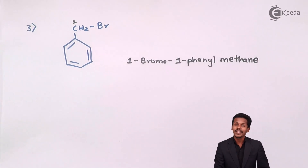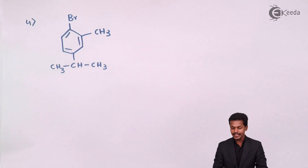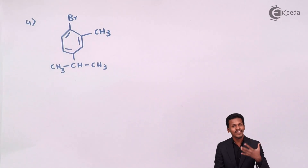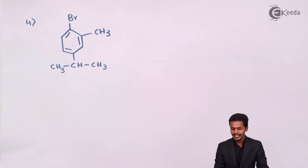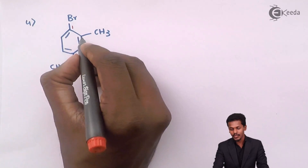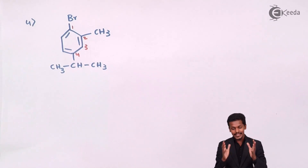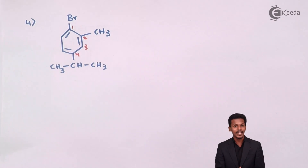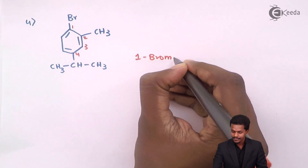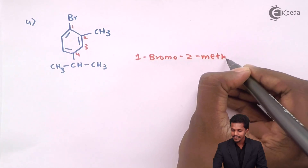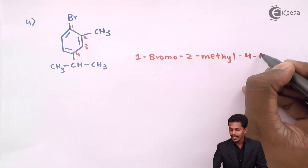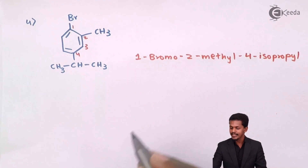Now let us move to the next structure. This is again an example of a haloarine, so the least number should be given to the carbon atom where the bromine or halogen atom is attached. I give carbon number 1 there, then move in a clockwise direction — because more substituents are found in that direction — giving carbon numbers 2, 3, and 4. The groups attached to this benzene ring are a bromo group, a methyl group, and an isopropyl group. In alphabetical order, the IUPAC name is 1-bromo-2-methyl-4-isopropylbenzene.